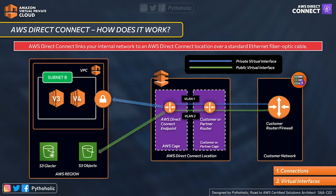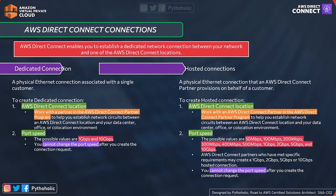This level of detail may not be required for the exam, but it is useful for future work with Direct Connect. The customer router connects to the AWS Direct Connect location, which connects to the AWS region. This is a completely secure, dedicated channel — you are the only one using it. It is far more secure than using the public internet, as was the case with Site-to-Site VPN.